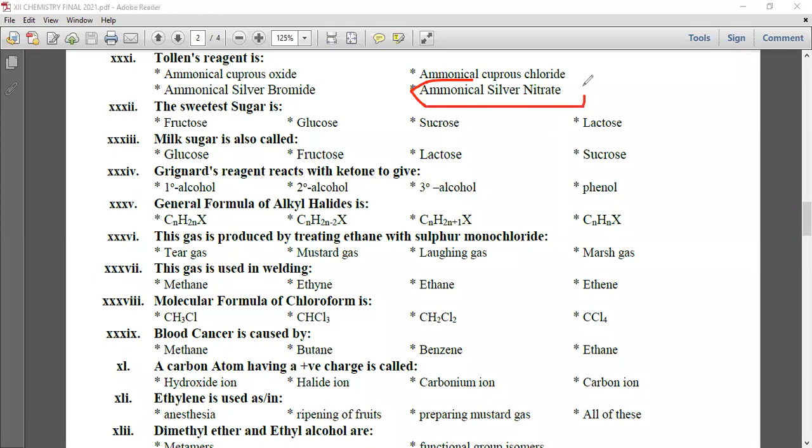The sweetest sugar is fructose. Milk sugar is also called lactose. Grignard reagent reacts with ketone to give tertiary alcohol. Aldehyde gives secondary alcohol, formaldehyde gives primary alcohol, and any ketone gives tertiary alcohol.